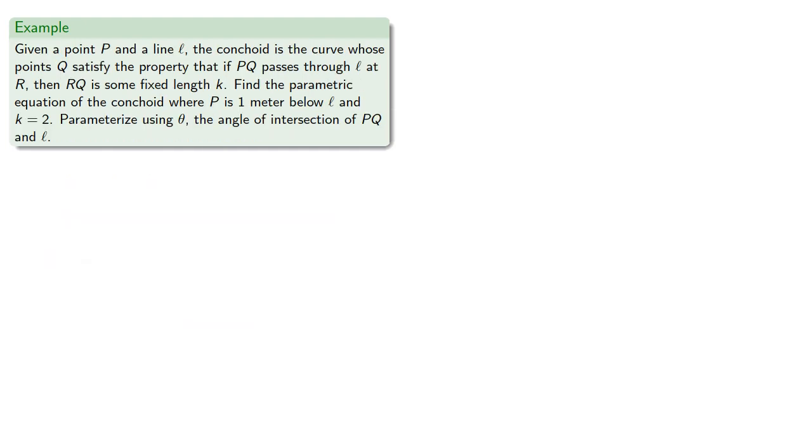Let's consider the following. Given a point P and a line L, the conchoid is the curve whose points Q satisfy the property that if PQ passes through L at R, then RQ is some fixed length k. Let's find the parametric equation of the conchoid where P is 1 meter below the line L and k equals 2, and we'll parametrize using θ, the angle of intersection of PQ and L.